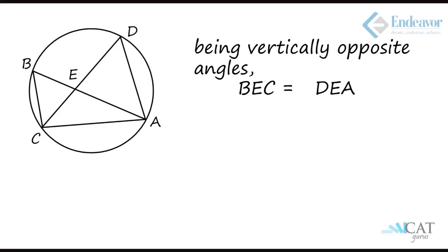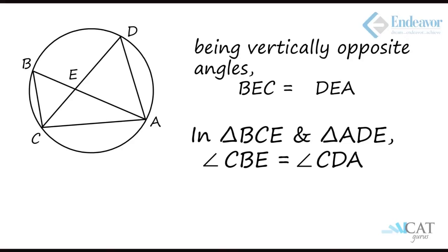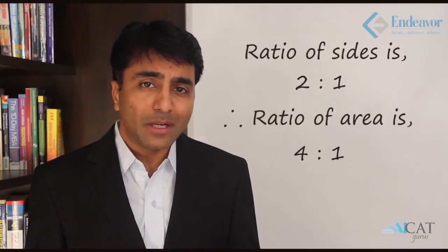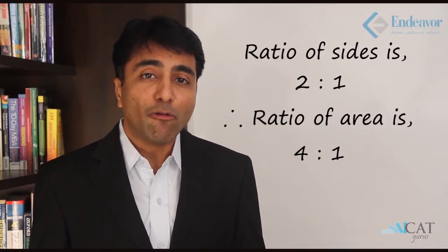It is given that AD is 24 and BC is 12, and we are supposed to find the ratio of the area of triangle CBE to triangle ADE. Angles B and D are formed by the same chord AC and are on the same side of the segment, hence they are also equal. So we can prove that both triangles are similar. The ratio of sides is 24 to 12, that is 2 to 1, and hence the ratio of areas will be 4 to 1.